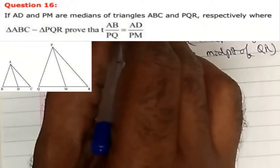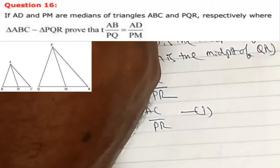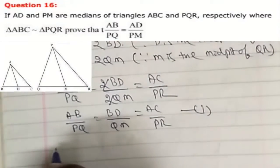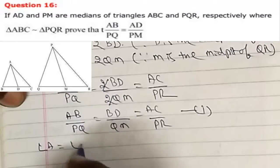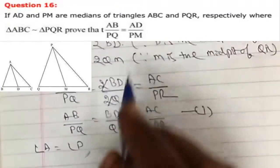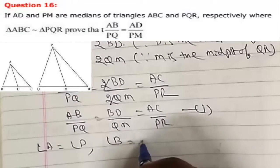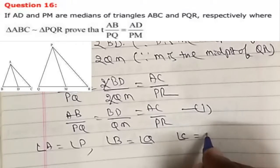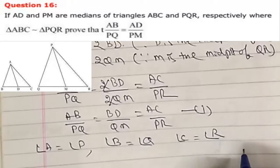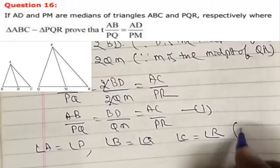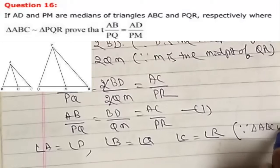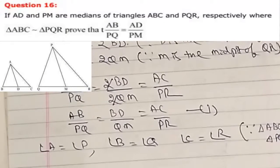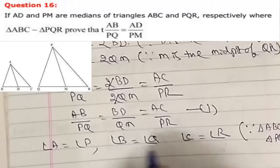Since triangle ABC is similar to triangle PQR, the corresponding angles are equal. So Angle A equals Angle P, Angle B equals Angle Q, and Angle C equals Angle R.